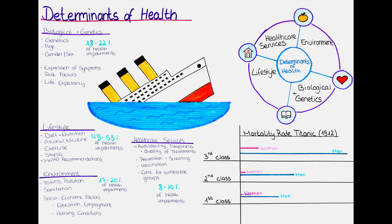The first determinant of health is the biological determinant. Biological determinants of health include genetics, age and sex. I want to make a short excursion into the definition of gender and sex. In medical terms we refer to sex as being male and female depending on the biologically given chromosomal arrangement, while gender, divided into feminine and masculine, is socially acquired.